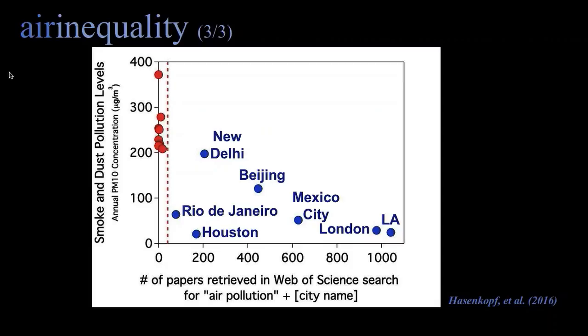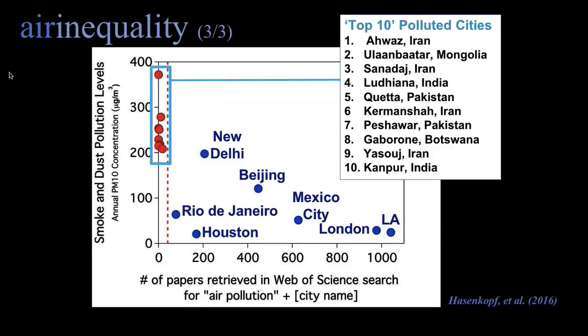The red dots are from the 2011 WHO PM10 air quality database — the top 10 most PM10-polluted places in their database. If you sum up all papers about those red dot places, you get that dashed red line: 41 papers have been published about the most polluted places. That's five times less than the number of papers published for Houston, Texas — and Houston has an order of magnitude better air quality. It's not just unfair; it actually affects our scientific ability to understand the relationship between human health and pollution.